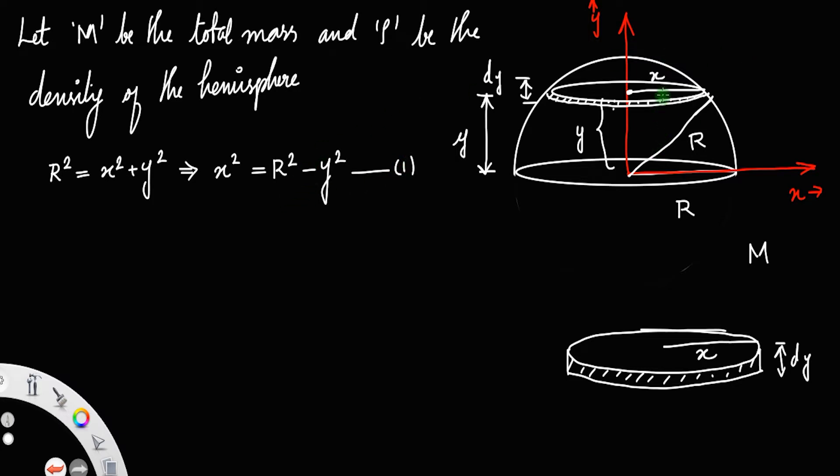We have the mass of this circular disk dm is equal to volume of the circular disk times its density. Volume is equal to area into thickness into density. The area, since it is a circle, will be pi x squared. Thickness is dy, so dy into rho.